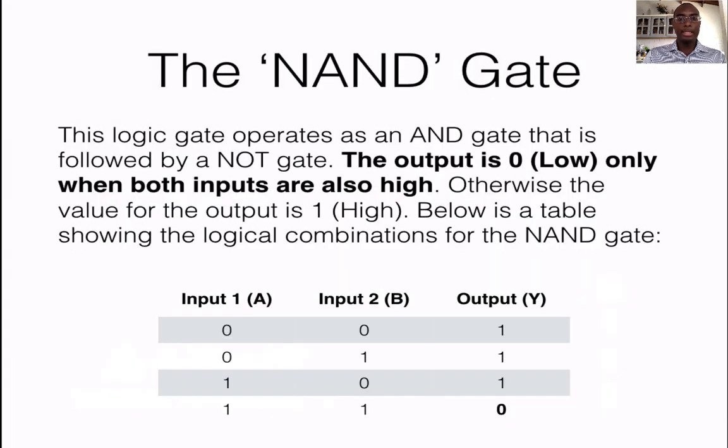The next gate is the NAND gate. The N refers to the negation of an AND gate. In other words if you combine an AND gate with a NOT gate you get what is called a NAND gate. So this is the opposite of an AND gate where the output is low only when both inputs are high. So looking at our truth table you can see that your outputs are 1 with the exception of the last one where you have 2 inputs being high, which gives you an output of 0.